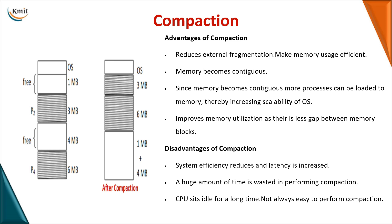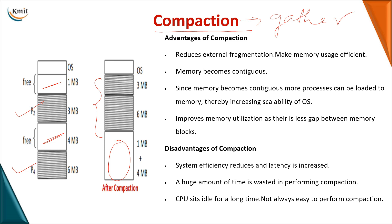To overcome external fragmentation, the technique used is compaction. In compaction, all empty memory locations are gathered together in one place. All occupied processes are moved to one end of memory and all the free space is consolidated at the other end. This creates a large contiguous free block that can accommodate new processes.